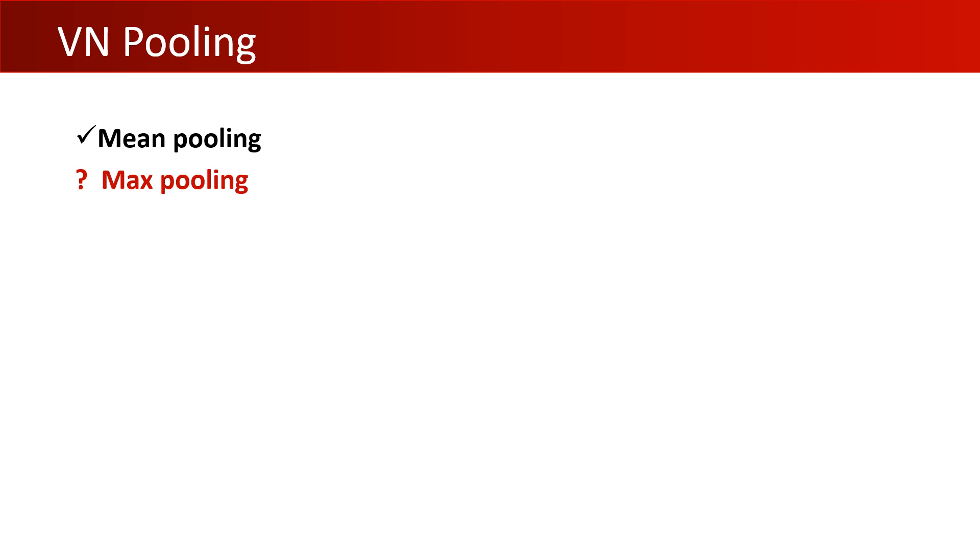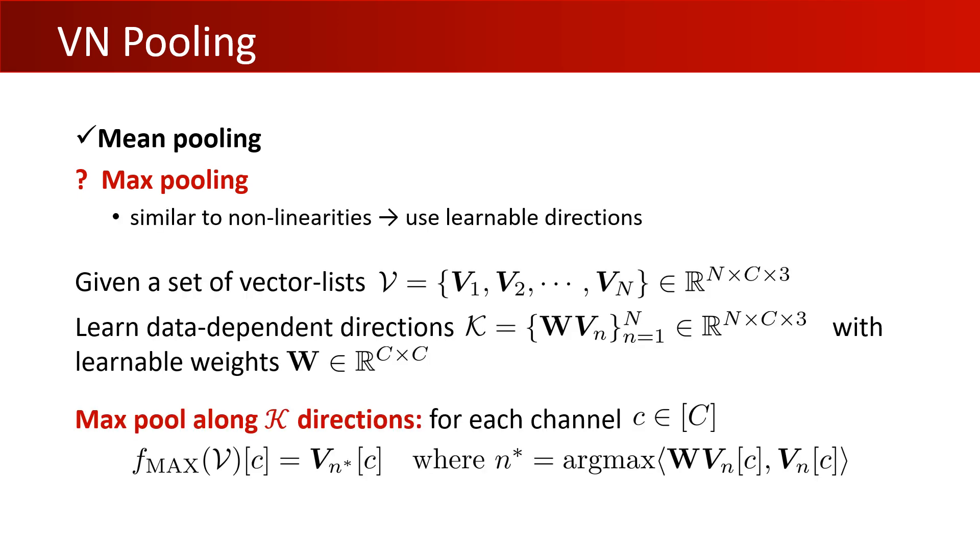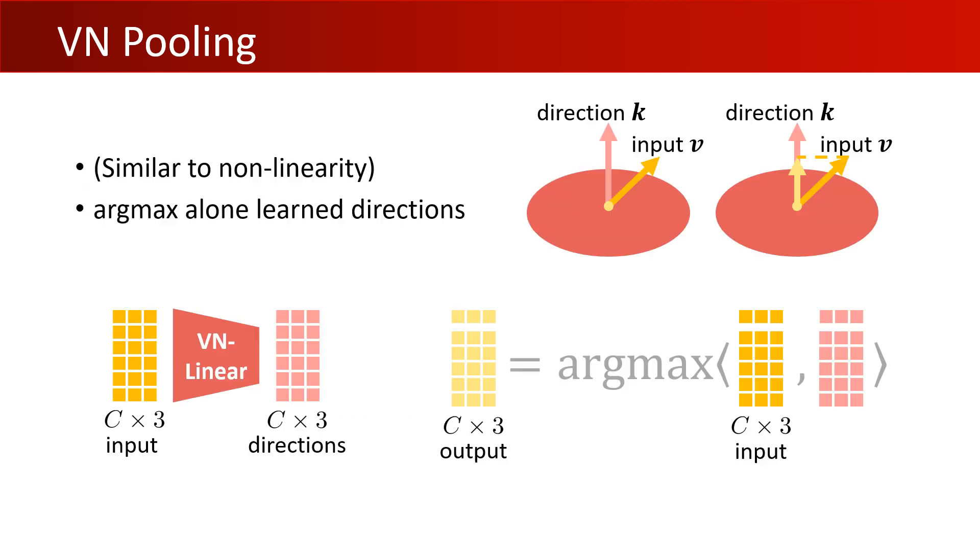We also define a VN max pooling layer as the counterpart to the classical max pooling of scalars. Given the set of vector lists, we learn an element-wise set of data-dependent directions k, and then compute the element of V that best aligns with k, and select it as our global feature. Here shows an illustrative figure of the VN max pooling. It's similar to what we have done in the nonlinearity.